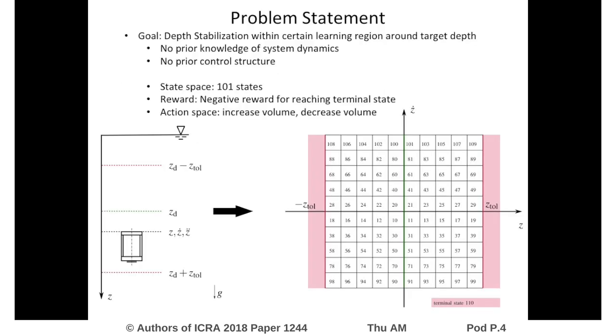We consider a submerged diving agent whose state is defined by its depth and velocity. The diving agent has a fixed volume and an adjustable volume. The latter is used for actuation.